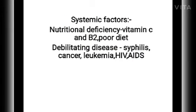Systemic predisposing factors include nutritional deficiency — particularly vitamin C and vitamin B12 — and poor diet. Debilitating diseases such as syphilis, cancer, leukemia, HIV, and AIDS also lead to ANUG.